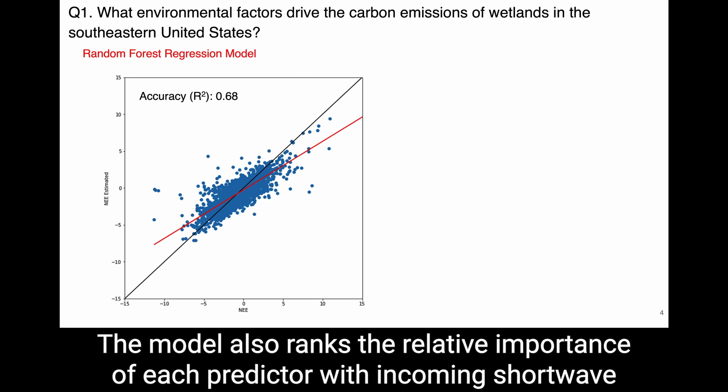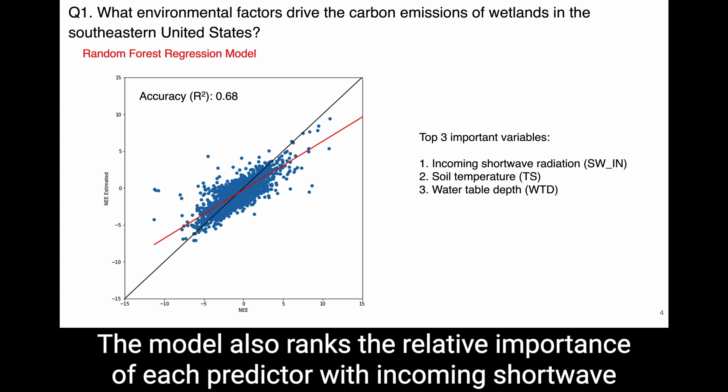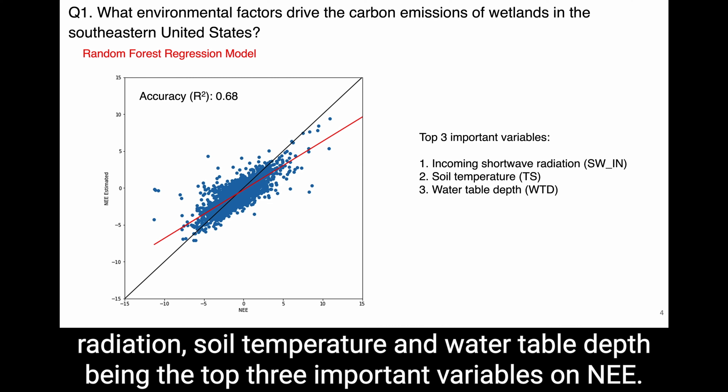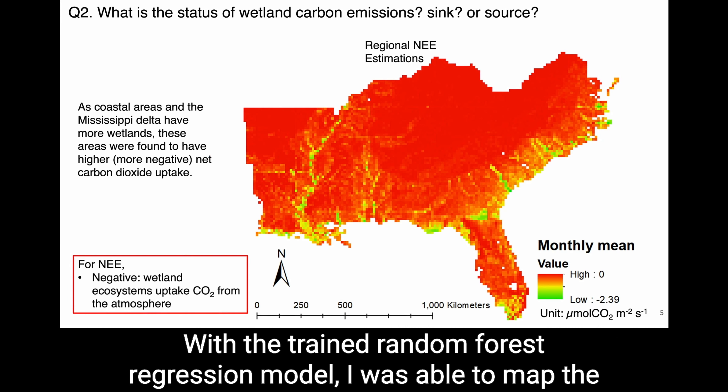The model also ranks the relative importance of each predictor, with incoming shortwave radiation, soil temperature, and water table depth being the top three most important variables for NEE. With the trained random forest regression model, I was able to map the NEE over the entire southeastern U.S.